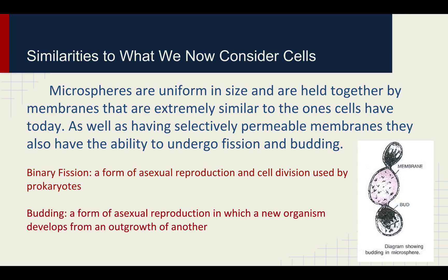Just in case you don't know, the definition of binary fission is a form of asexual reproduction caused by cell division, often found in prokaryotes. Budding is also a form of asexual reproduction, where a daughter cell would grow off of the parent cell.